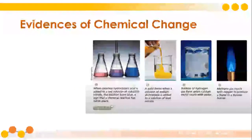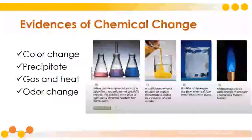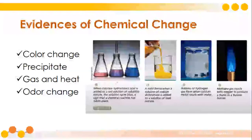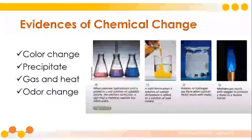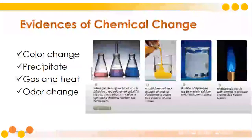What are the evidences of a chemical change? There are different chemical changes that occur during a chemical reaction. First, we have what we call a color change. This is the most prominent chemical change to observe. For example, when a colorless hydrochloric acid is added to a red solution of cobalt nitrate, the solution turns blue — a sign that a chemical reaction has taken place. Color change is the easiest way to see if a chemical reaction has occurred.